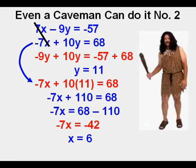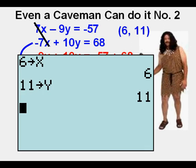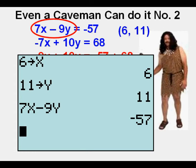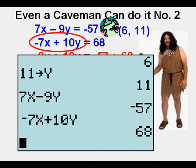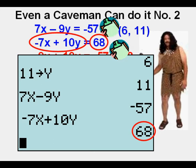He makes note of the coordinates, 6 comma 11. We'll start our check of Aug's work by storing 6 for x and 11 for y in our graphic calculator. That would be 6 storage x, enter, 11 storage y, enter. We now enter the left side of the first equation, which is 7x minus 9y. We see that it equals negative 57, just like our original first equation. Check. Now we enter the left side of the other equation, negative 7x plus 10y. And we see that it equals 68, just like our first equation. Check.